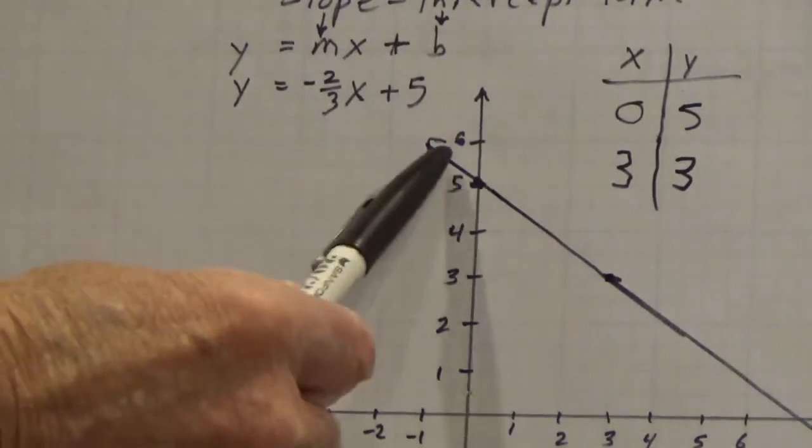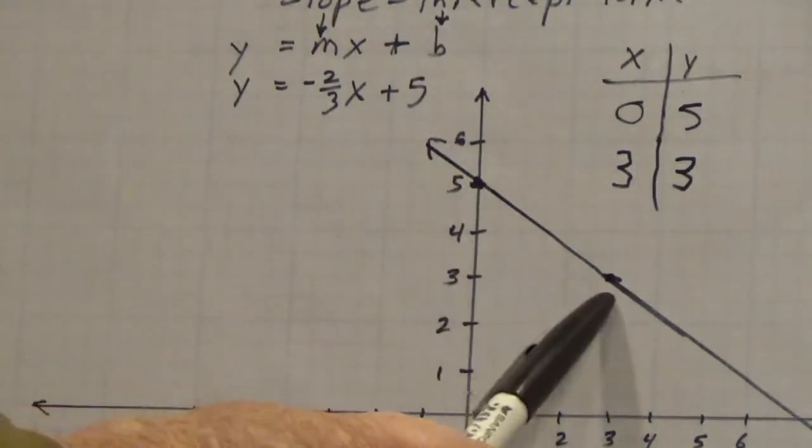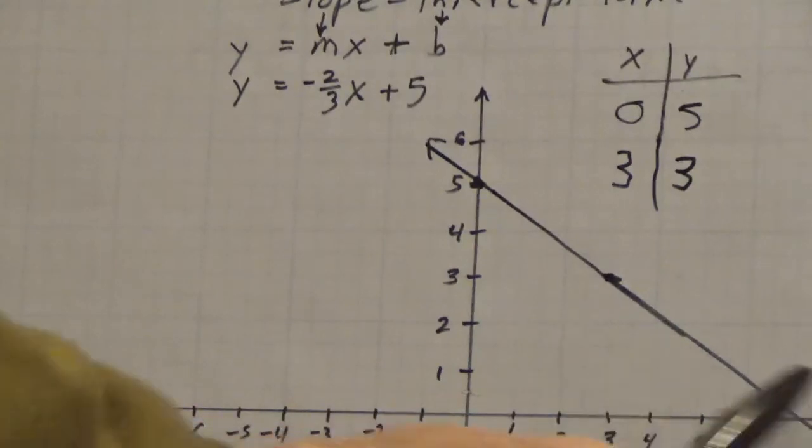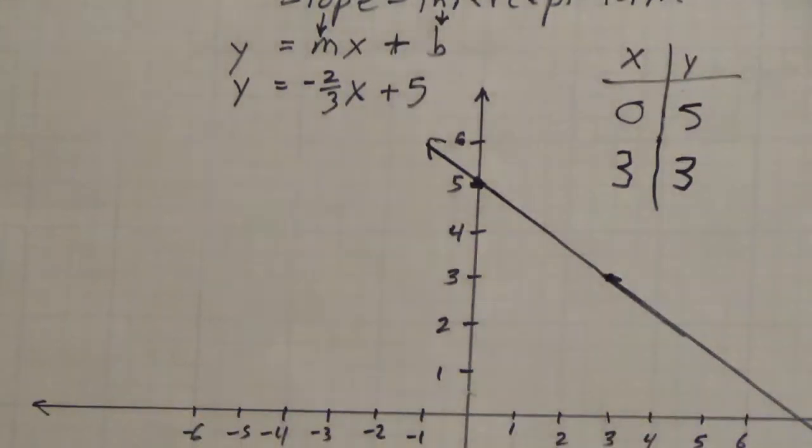So my slope-intercept form is y equals negative 2 thirds x plus 5. The y-intercept is 5. It goes 2 down, 3 over. 2 down, 3 over.